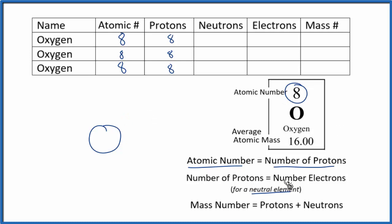So the number of protons will equal the number of electrons for a neutral element, so we're gonna have 8 electrons for each of these isotopes of oxygen. We'll talk more about isotopes in a minute.